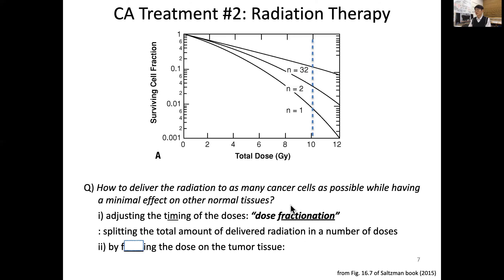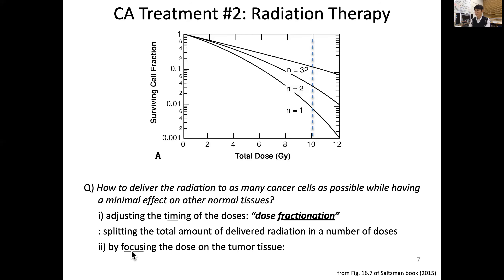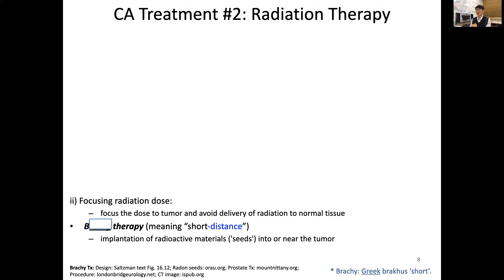Splitting the total amount of delivered radiation into a number of doses — dose fractionation — is a good way to protect our normal cells. Another approach is to focus our dose directly onto the tumor tissue. While it's not always possible, giving radiation only to the area near the tumor and not much to normal tissue would be ideal.